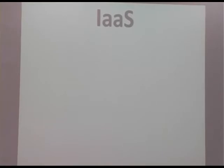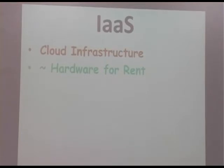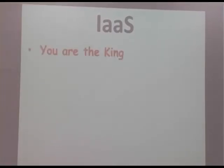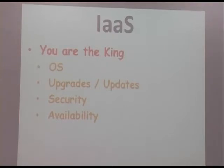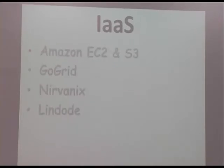Infrastructure as a Service — also called cloud infrastructure — is approximately like getting remote hardware for rent. You get servers, storage, and networking. When you get infrastructure, you are the king: you manage everything, install your own OS, install all your tools. You have complete control over the environment with no limitations. You can do whatever you want in this infrastructure.